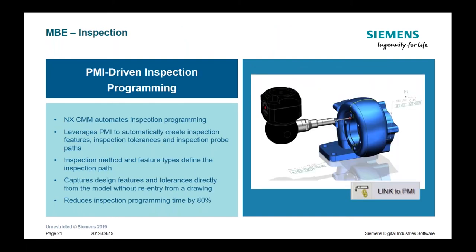Inspection is another area. Siemens offers an NX CMM solution that automates inspection programming by leveraging PMI on a model and automatically creates inspection features, inspection tolerances, and inspection profiles. It has a function called Link to PMI that automatically defines all nominal inspection data target points, planes, and cross-section curves required for CMM programming execution. This is another example where PMI can be used to drive inspection and reduce programming time by up to 80%.